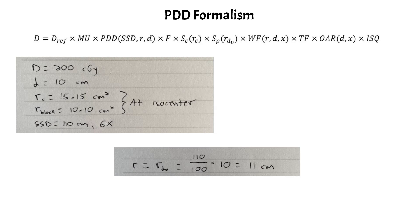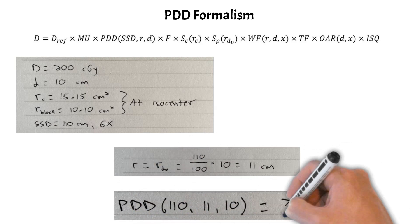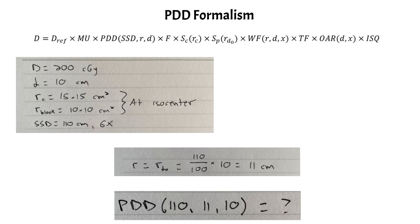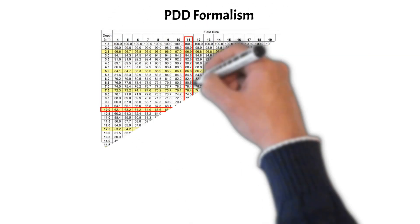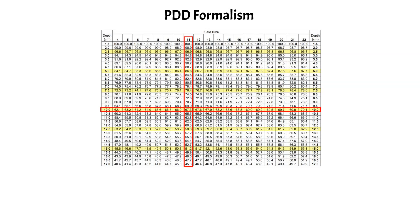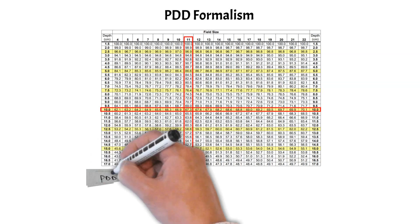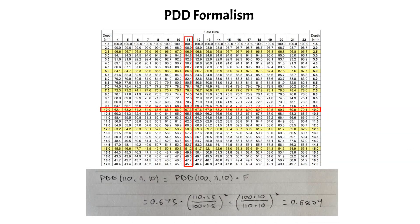And also by looking carefully at that equation, you can see that the PDD value that we need is for an SSD of 110 centimeters, which we do not have tabulated. We have a PDD that is tabulated at 100 centimeters. So we actually need to calculate what this PDD at 110 centimeters is. And we can do that using the Maynard F factor. So this is the tabulated PDD that you can see for 100 centimeters. The PDD value for a field size of 11 and depth 10 is going to be 67.3.